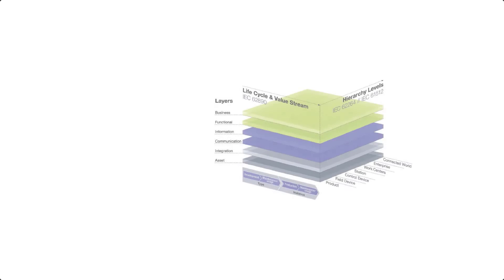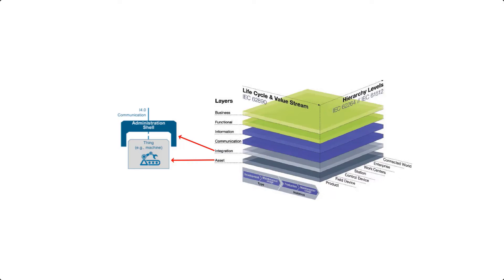If you look at the layers axis of the reference architecture model for Industry 4.0, you can see that the physical properties of an asset are at the bottom of the stack, followed by an integration layer, which is where the administration shell of that asset lives — providing digital representation of the real asset, data about the current status of the asset, data generated during the life cycle of the asset, and the functionalities of the asset. This also illustrates that the administration shell is the element where the communication layer, information layer, functional layer, and business layer are deployed, making it an access point of information and value-added functions in Industry 4.0. This is why the asset administration shell takes the role of a digital twin in smart manufacturing.